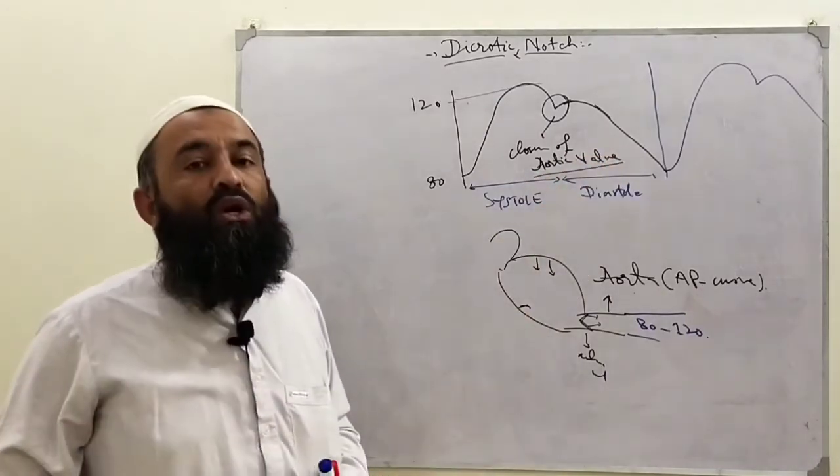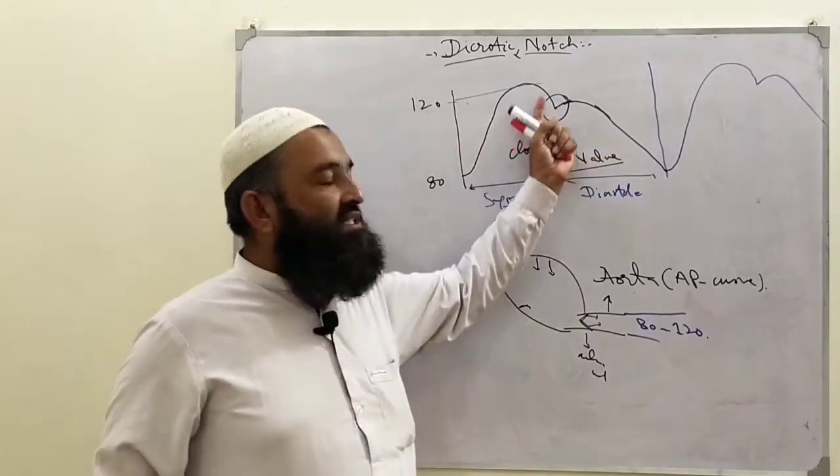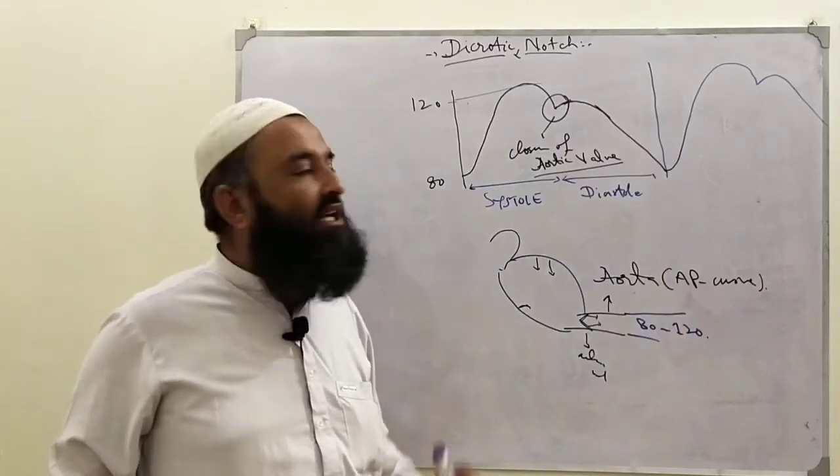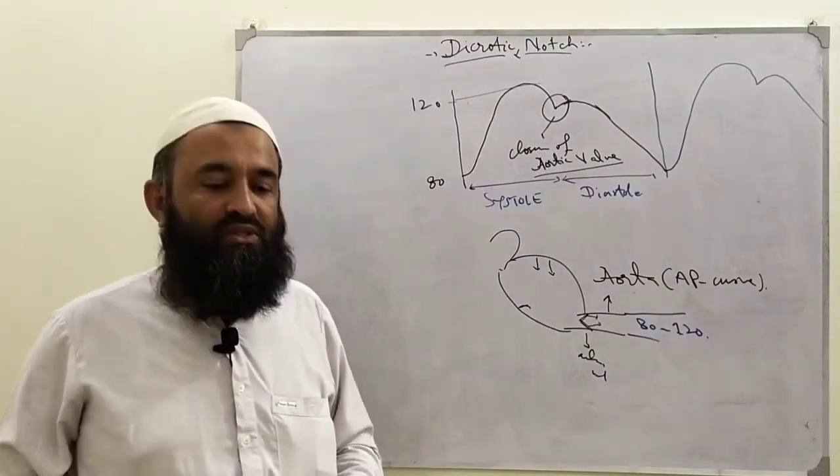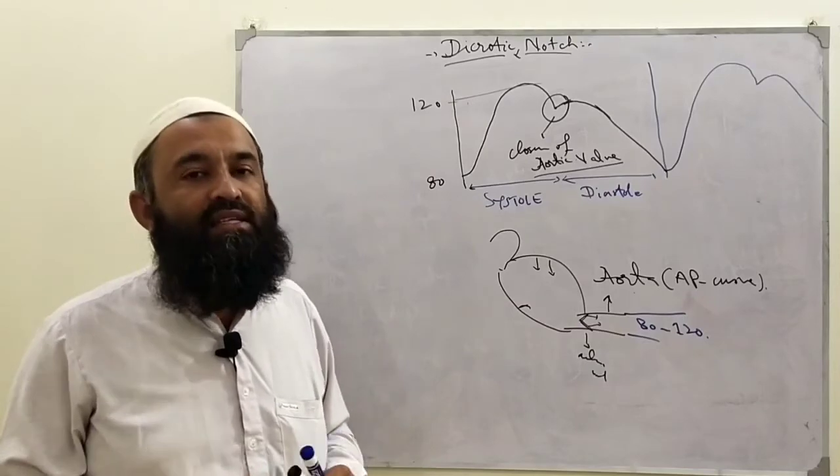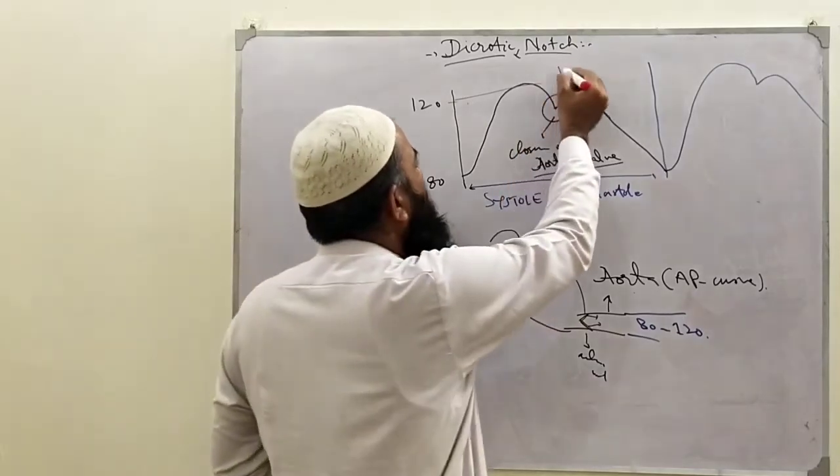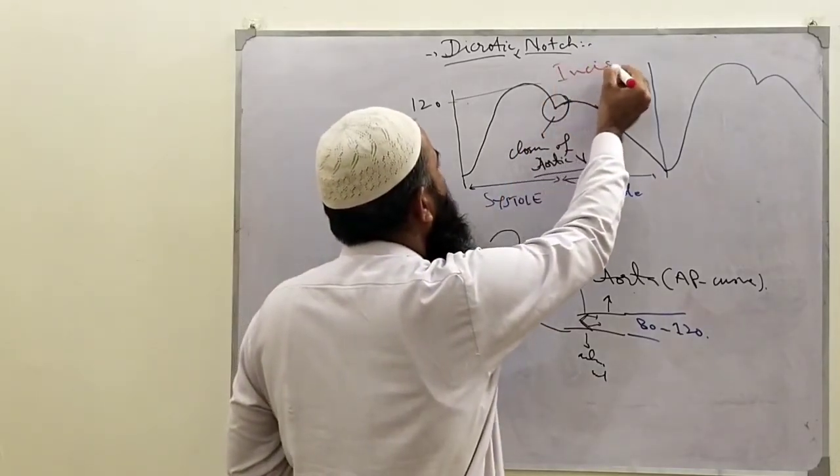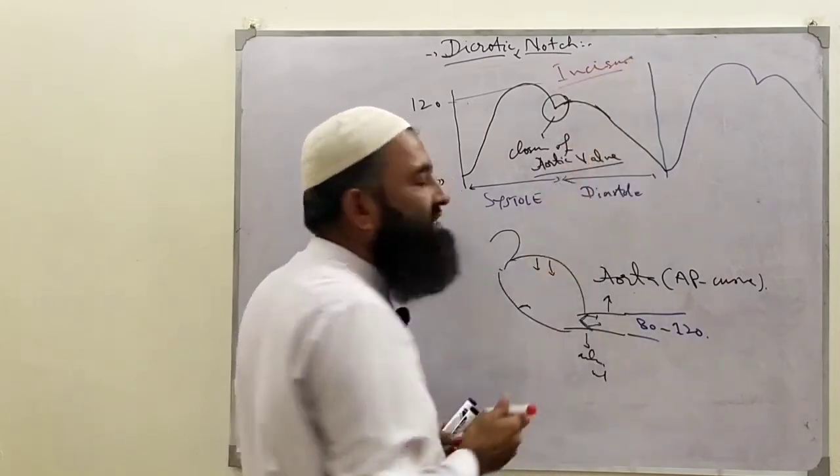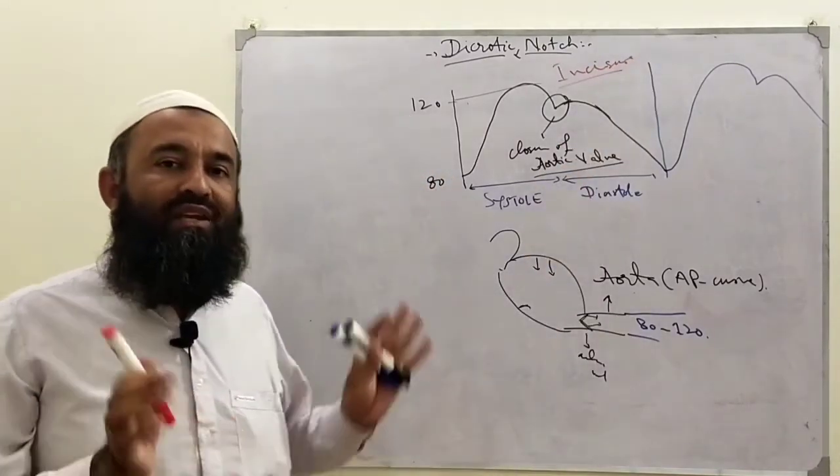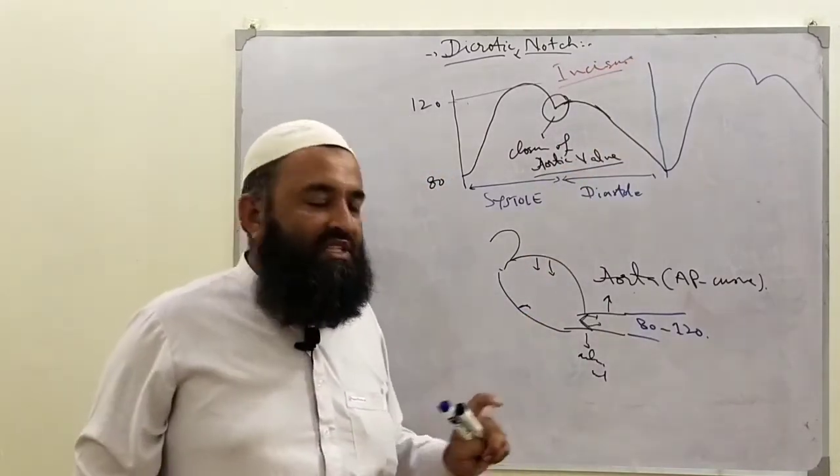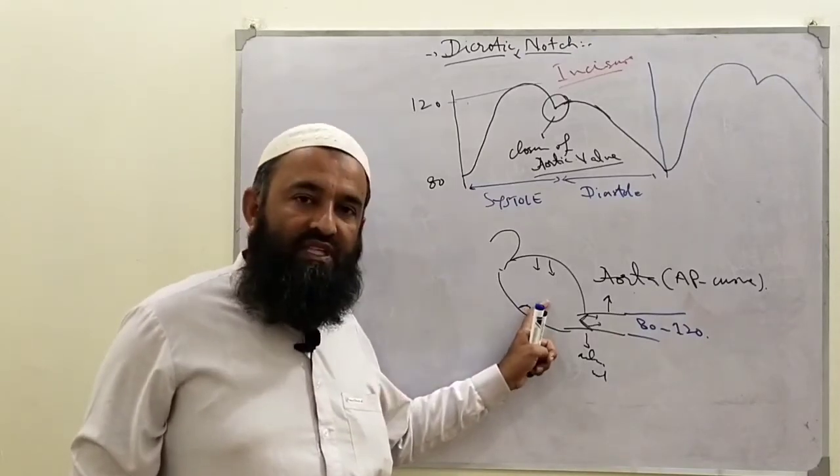This notch in which first there is an increase then decrease in pressure - this notch is called the dichrotic notch, or it has another name known as incisura. This is a normal notch normally seen if we check the pressure changes on the left side in the aorta.